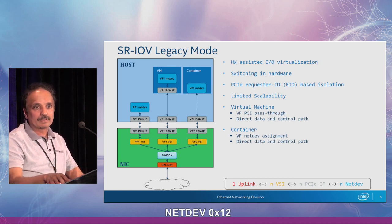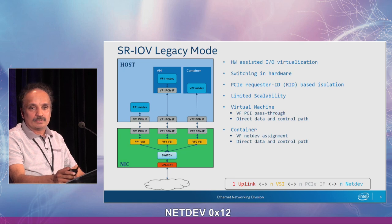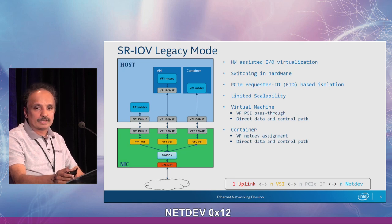There are a couple of limitations with this model. One is limited scalability — the number of VFs is generally limited by the PCI spec because of the requester ID limitation, so generally you can have only around 64 to 128 VFs per PF. The other issue is with flexibility, as all these VFs are generally created at the same time and resources are allocated equally among all the VFs. The PF driver generally decides on the resource allocation.